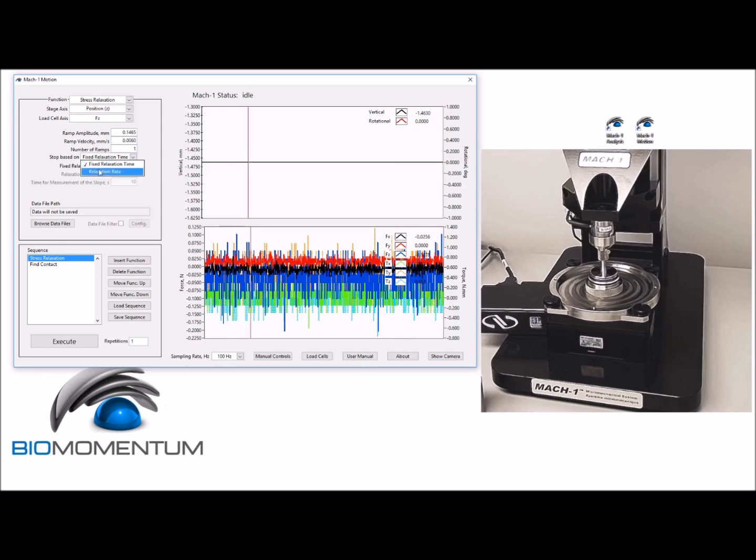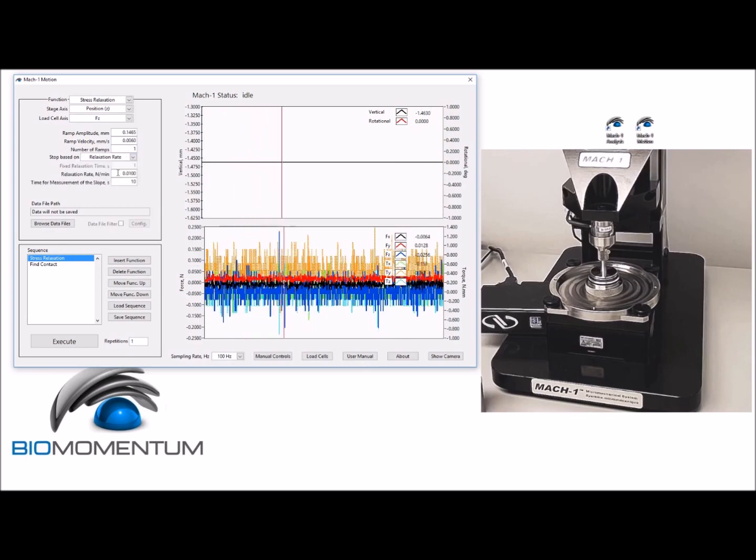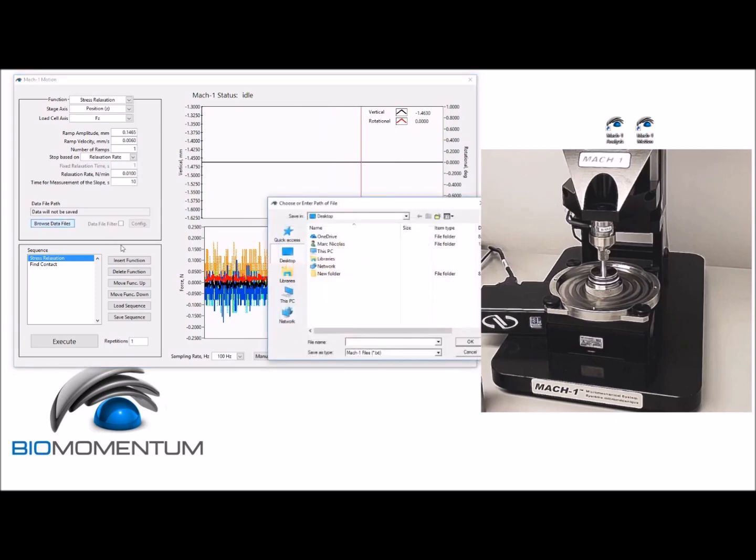Of 0.01 Newton per minute with a time for measurement of the slope of 10 seconds. We will save the data in a file with the following file name: group number underscore team number underscore torsion underscore rubber.